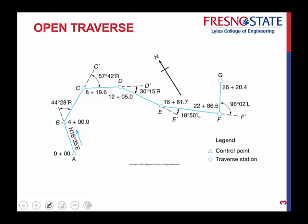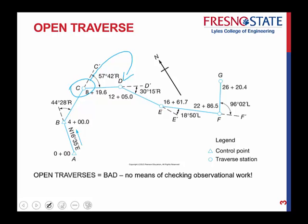An open traverse is the exact opposite. You can start at A with a control point and go to B with a control point, but as you continue from B to C to D, E to F, and end at G — G is just another traverse station. There's nothing saying you couldn't have messed up at C or D. There is nothing to check exactly what you did. So you have to be careful when dealing with whether you create an open traverse or use data based on one.